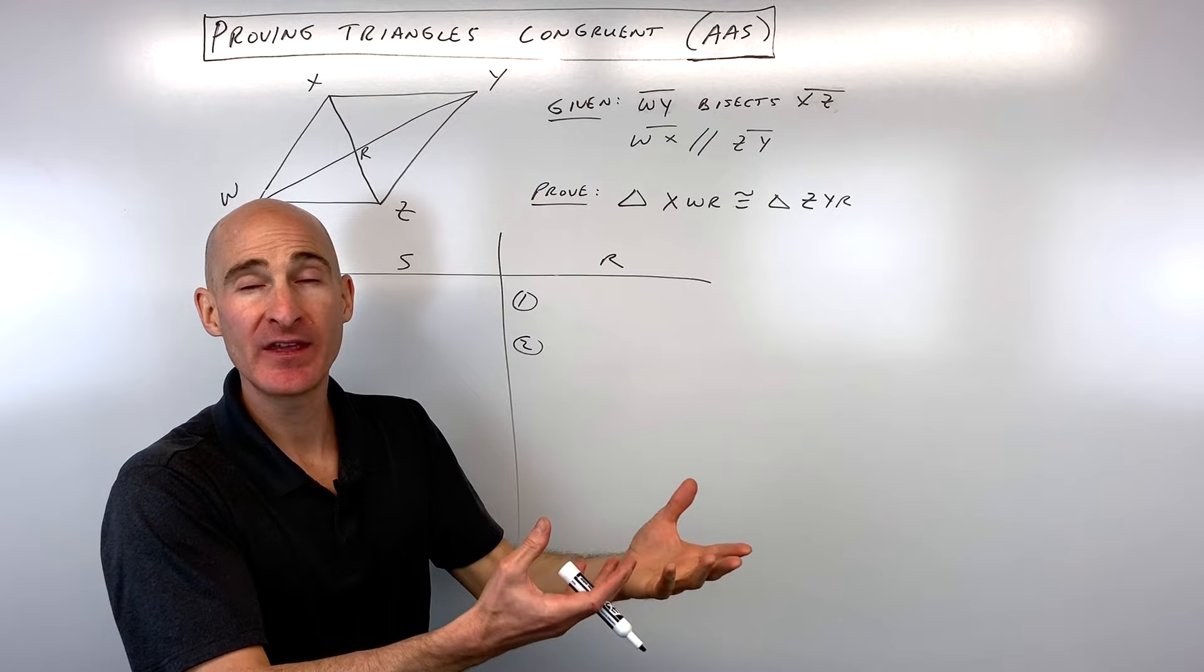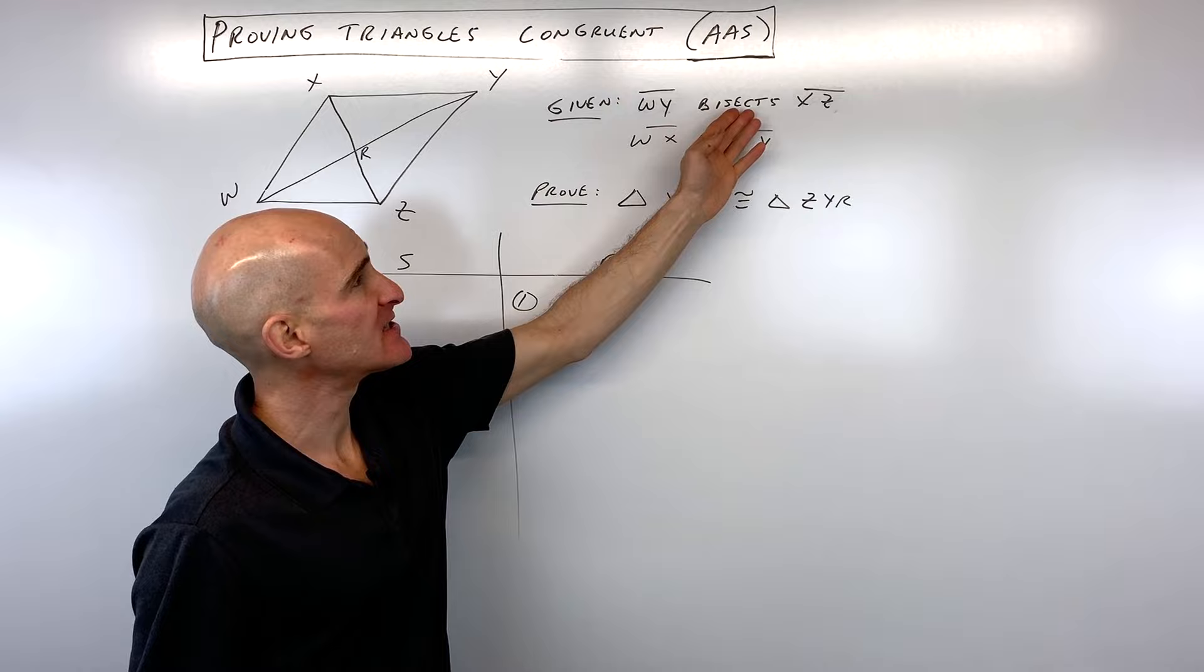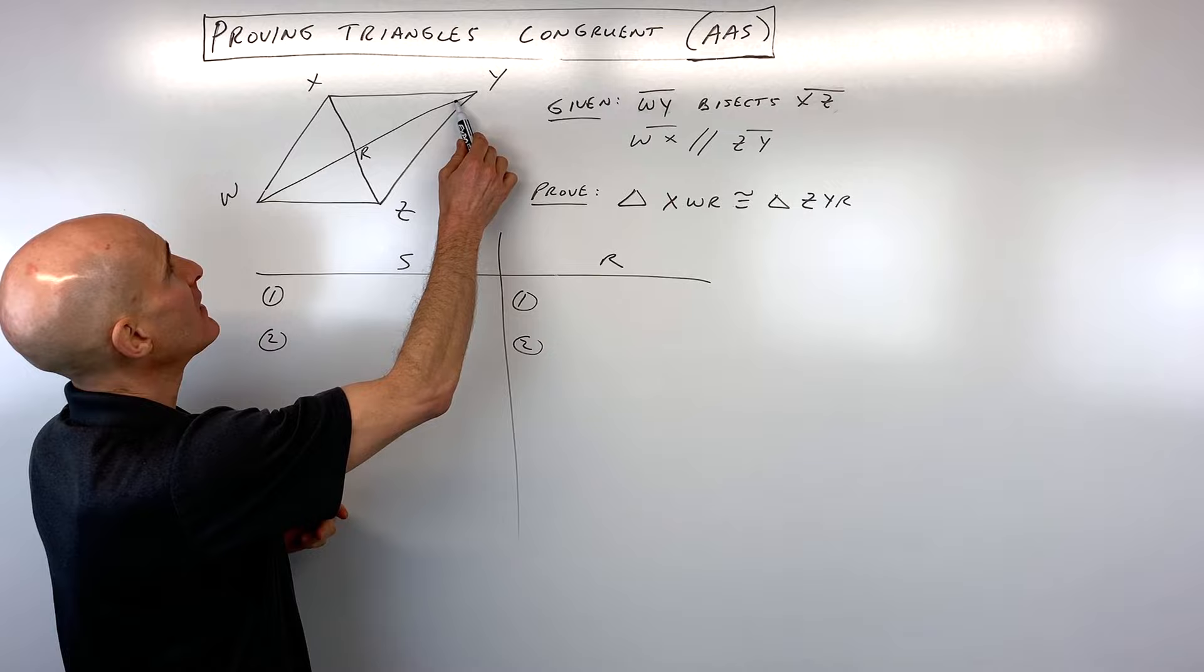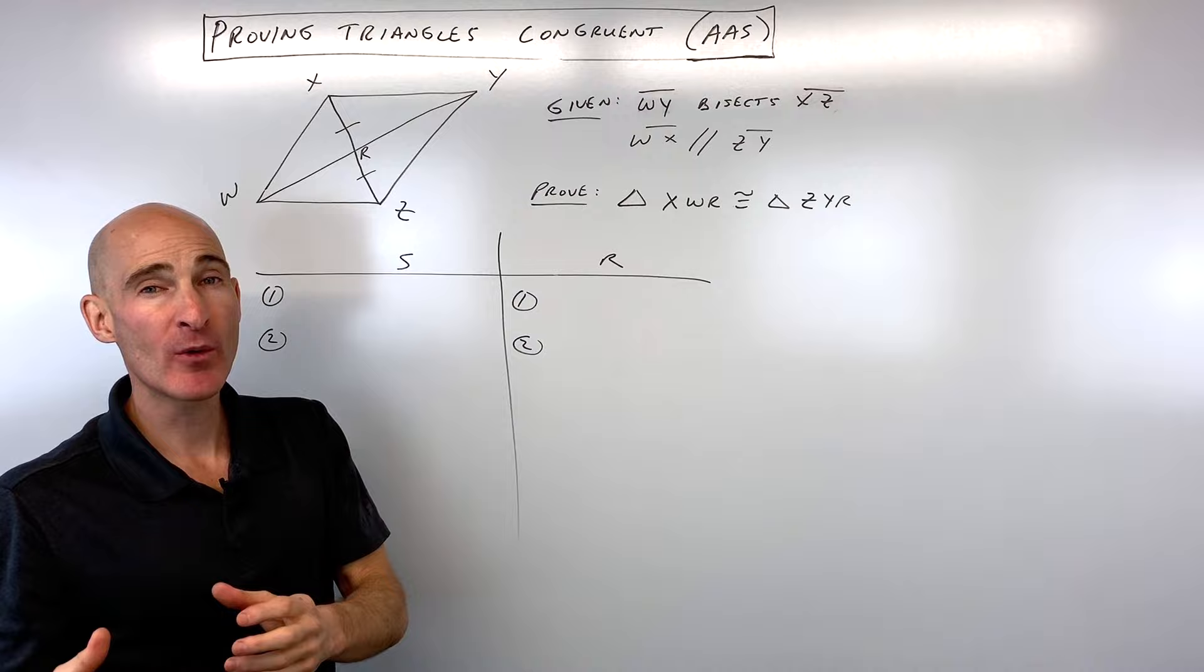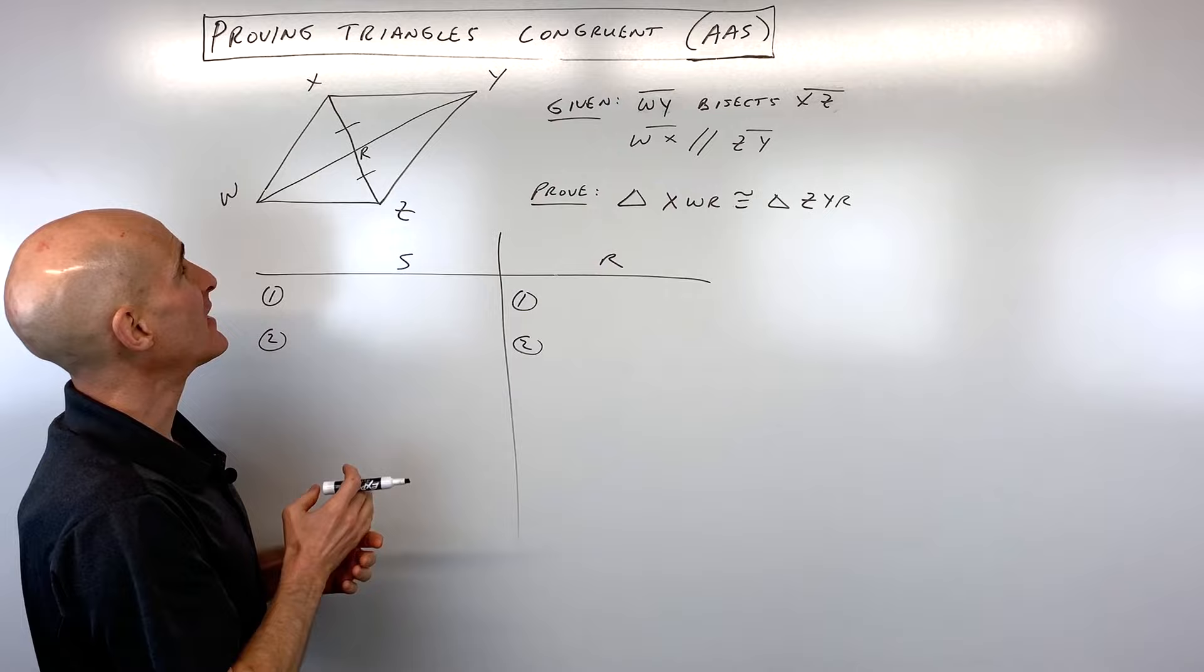So let's go to the givens here. WY bisects segment XZ. So here's WY bisects XZ. So WY is cutting XZ in half, meaning that this half is congruent to that half. Now when I figure something out, and you might want to do this too, is go ahead and mark it on the diagram so you don't have to remember it. You can see it visually on the diagram.